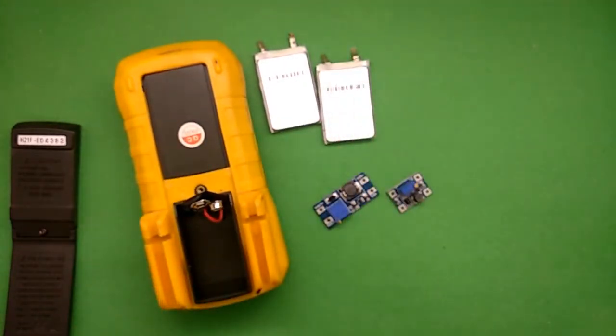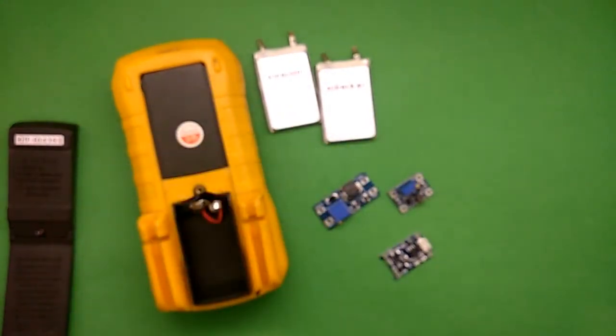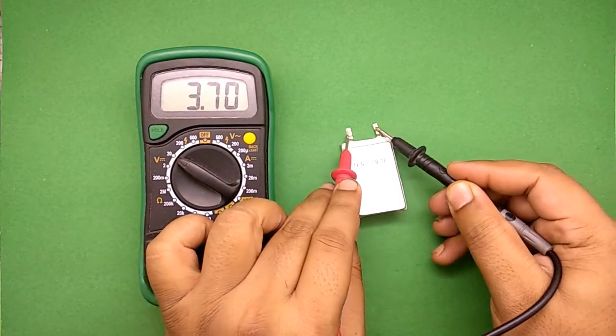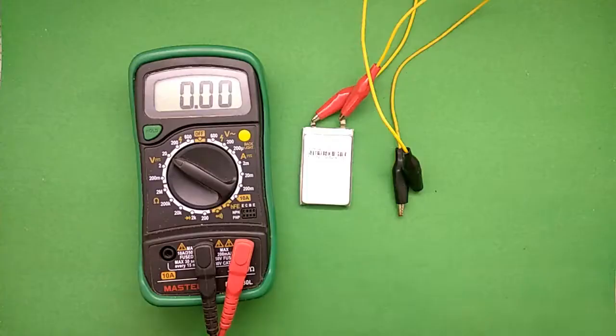And this is a TP4056 module which we are gonna use to recharge batteries. Now as you can see, the battery is 3.7 volts and we need 9 volts to run our multimeter.